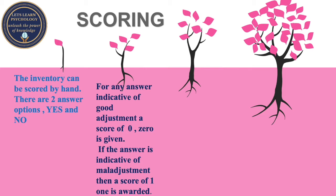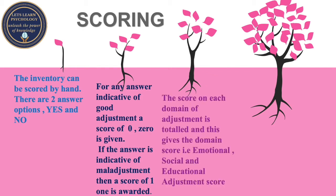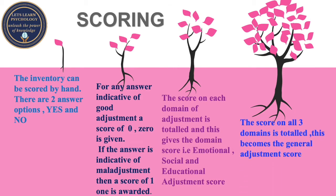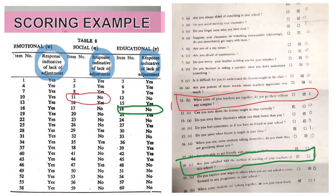Scoring the inventory can be done by hand. There are two answer options — yes and no. For any answer indicative of good adjustment, a score of 0 is given, while an answer indicative of maladjustment receives a score of 1. The sub-score of each domain is totaled up to get the domain score. The scores on all three domains are then totaled to get the general adjustment score.